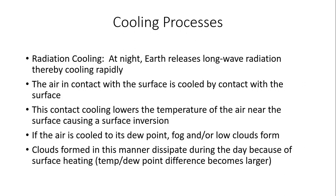Radiational cooling is another mechanism. At night, the Earth releases long-wave radiation and cools fairly quickly near the surface. Air in contact with the surface is cooled with it, and this contact cooling lowers the temperature of air close to the ground. This results in a surface temperature inversion — cooler air near the ground with warmer air higher up. If the air is cooled to its dew point, you typically get fog and low stratus clouds. These clouds dissipate during the day due to surface heating, which mixes the atmosphere more efficiently and increases the temperature-dew point difference.